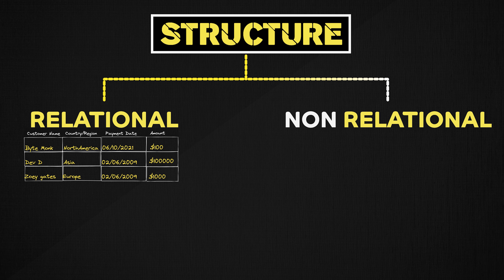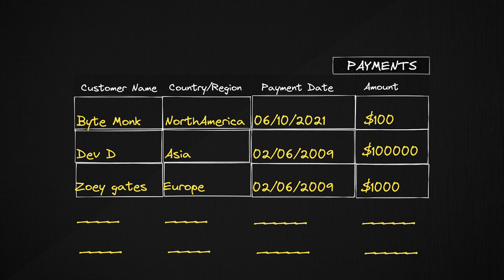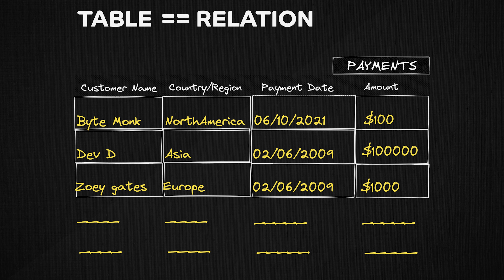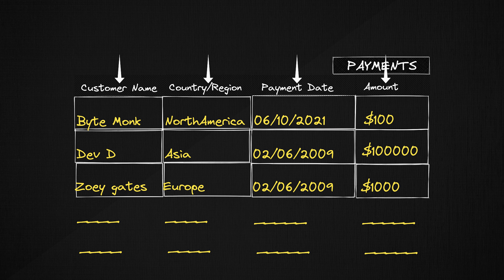A relational database imposes a tabular-like structure on the data stored in it. In other words, data stored in a relational database is in the form of a table, as you can see on the screen. Tables are also called relations in a relational database that store a bunch of data representing a specific entity. If you look at the column names and values in this table, you will soon realize it represents payments for some product. Every row in the table represents a single payment, and the columns represent the attributes of the entities, such as customer name, payment amount, payment date, and so on.